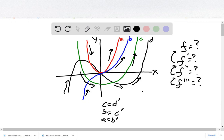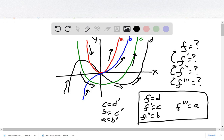So all of this together tells us that our function F is D, F prime is C, F double prime is B, and F triple prime is A.